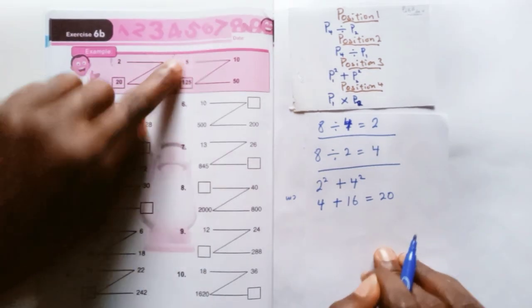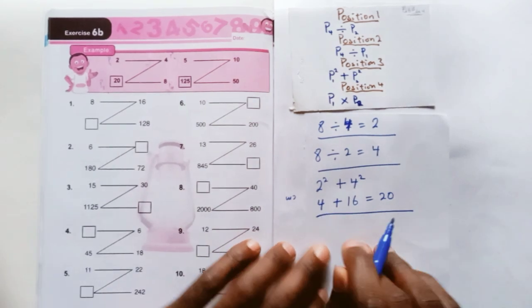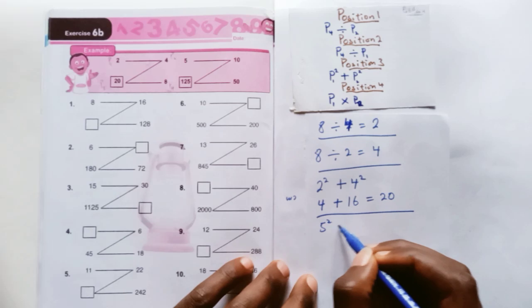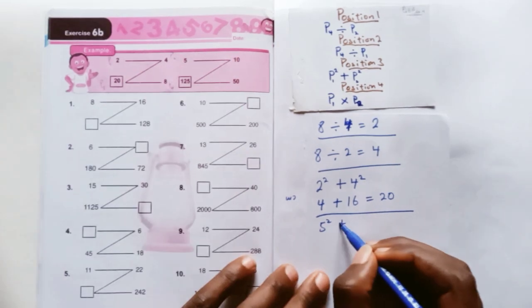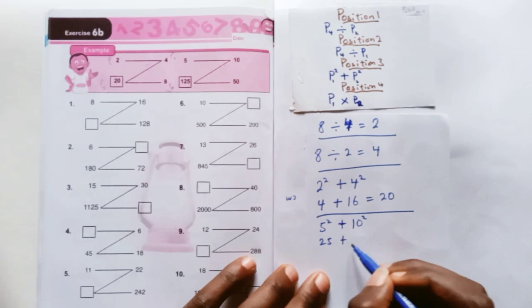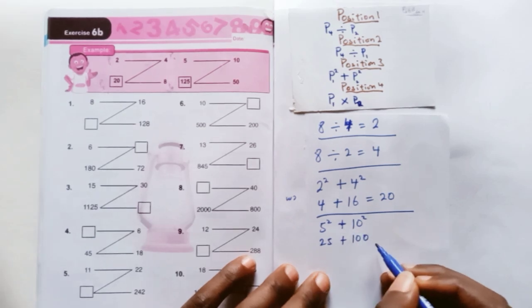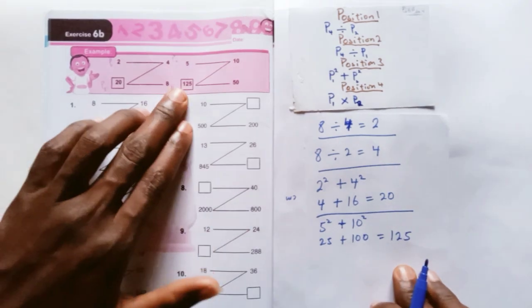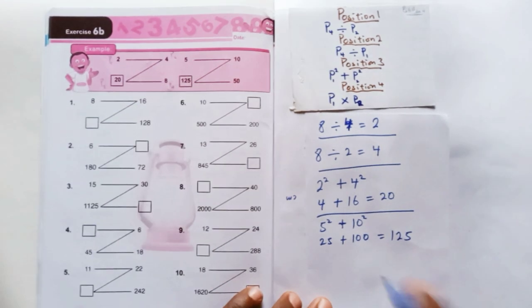Same thing here, let's do it. We're going to say 5 squared plus 10 squared. So 5 squared is 25 plus 10 squared is 100. So 25 plus 100 is 125. That's how we get that 125.